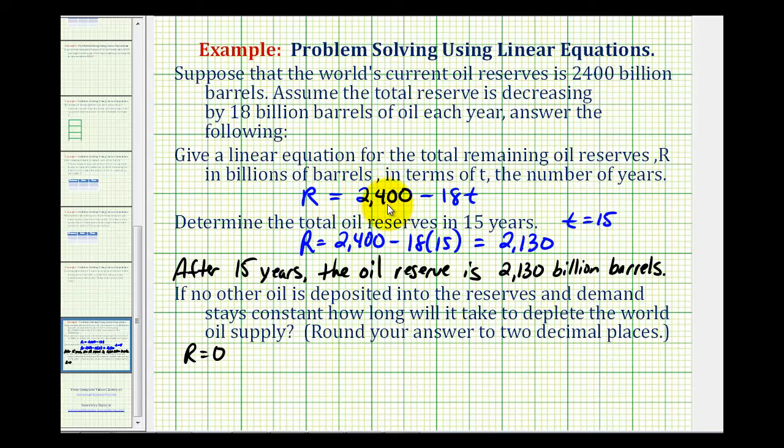So using this equation here, we'd have zero equals 2,400 minus 18t. So to solve for t, we'll add 18t to both sides of the equation. This would be zero, so we'd have 18t equals 2,400. We divide both sides by 18 to solve for t. So we'd have t equals this quotient, 2,400 divided by 18.